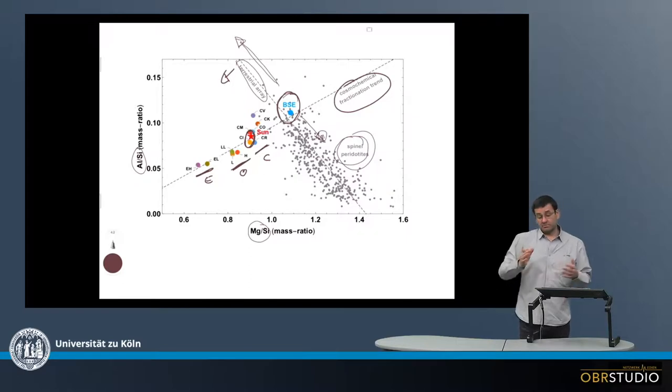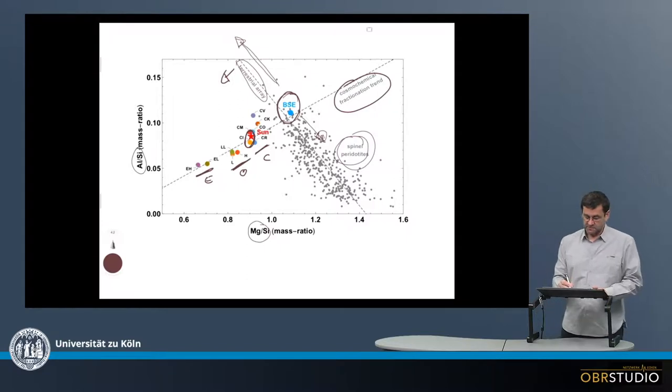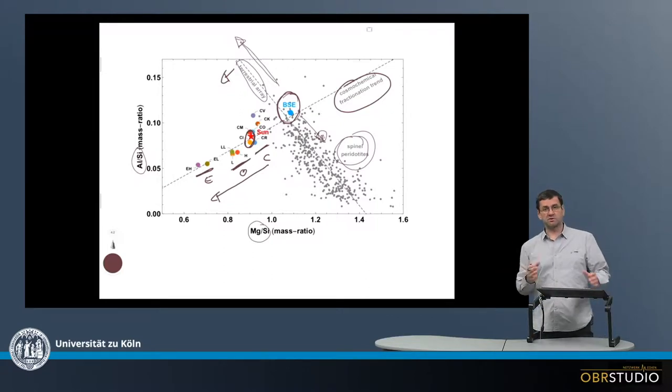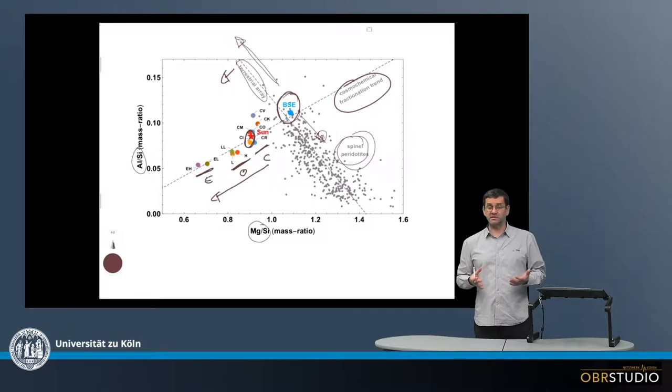Now, another thing with respect to magnesium-silicon, one thing that is still not resolved is why there is this fractionation in this direction. So, enstatite and ordinary chondrites are enriched in silicon. And the reason for this is unclear.